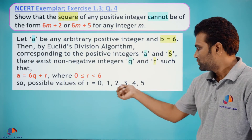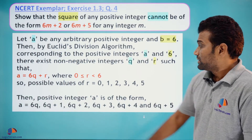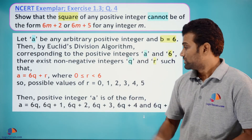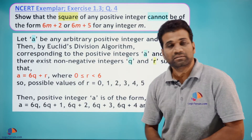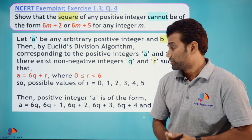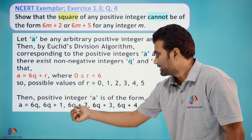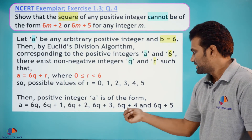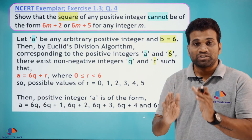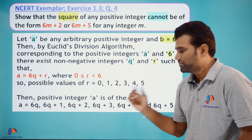Therefore the possible values of r are 0, 1, 2, 3, 4, and 5. The positive integer 'a' can be of the following forms: if r=0, a=6q; if r=1, a=6q+1; if r=2, a=6q+2; if r=3, a=6q+3; if r=4, a=6q+4; and if r=5, a=6q+5.